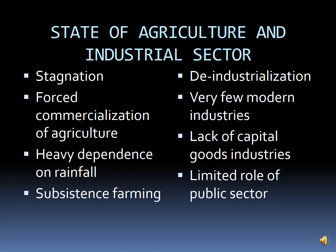Now I will explain the state of agriculture and industrial sector on the eve of independence. Indian agriculture was stagnant — there were no improvements in the agricultural sector. Around 70 to 75% of the total workforce was completely dependent on agriculture, and around 58% of the national income was contributed by the agricultural sector. Despite such a large population being dependent on agriculture, there was no development or growth in that sector.